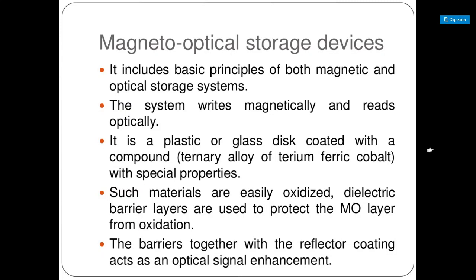To protect the MO layer from oxidation, dielectric barrier layers are used. These layers are coated above and below the magneto-optical layer so that the electrical field does not affect it. One or two more coats are applied above and below this layer to prevent oxidation with the environment.